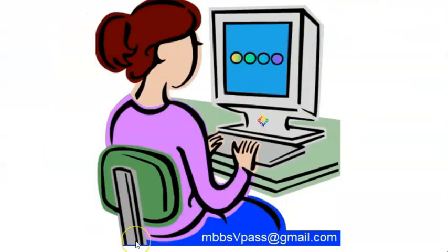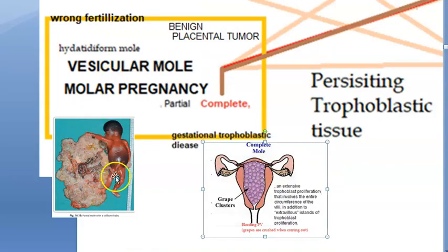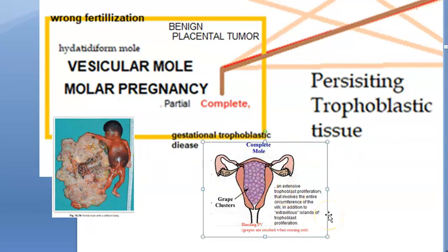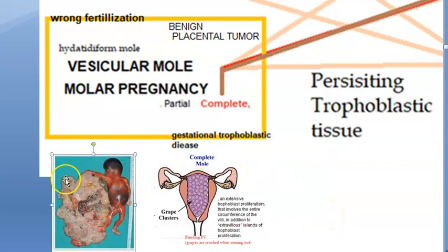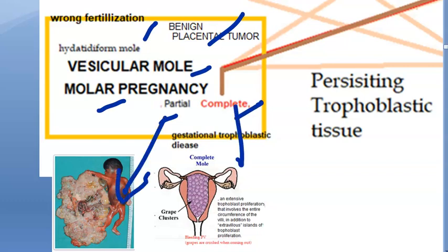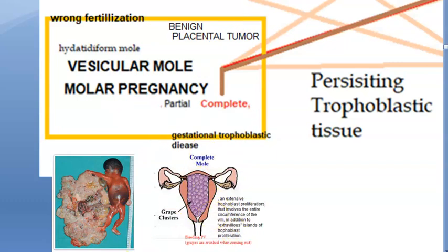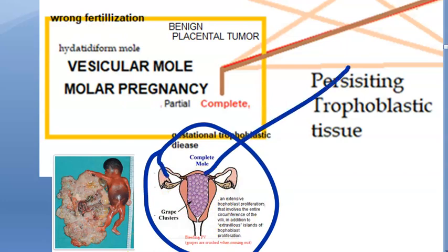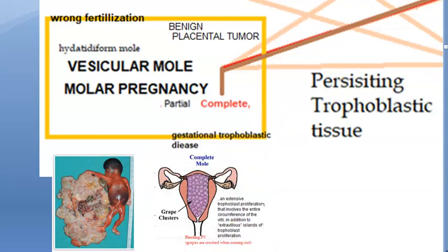Wrong fertilization results in a partial mole — where some villi are affected — or a complete mole, where all villi are diffusely and circumferentially affected. These conditions are all called vesicular mole, hydatidiform mole, or molar pregnancy — all the same thing. For exam purposes: partial mole has focal villous involvement; complete mole has all villi affected with both syncytiotrophoblast and cytotrophoblast involved, and it can progress to carcinoma.